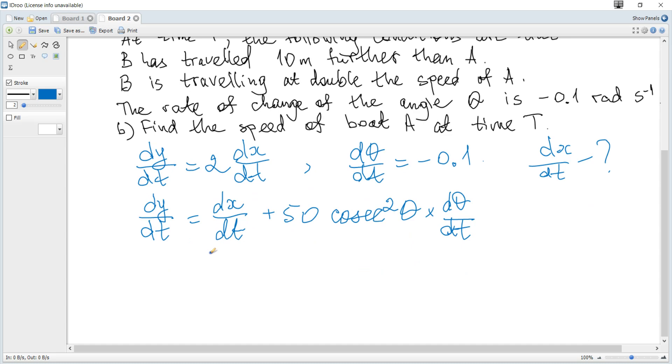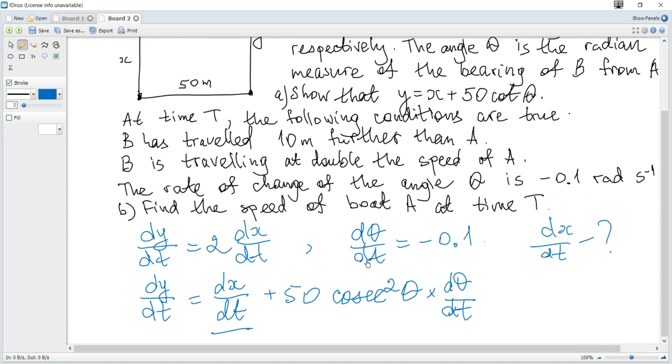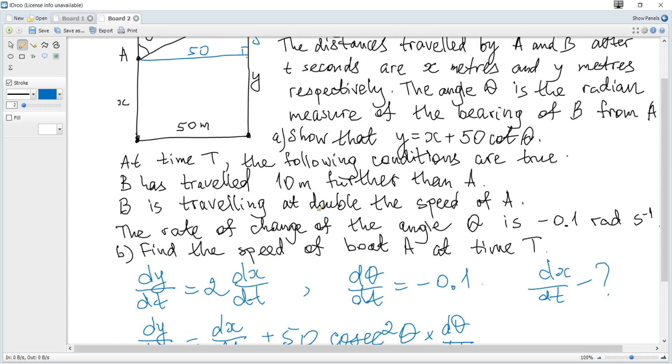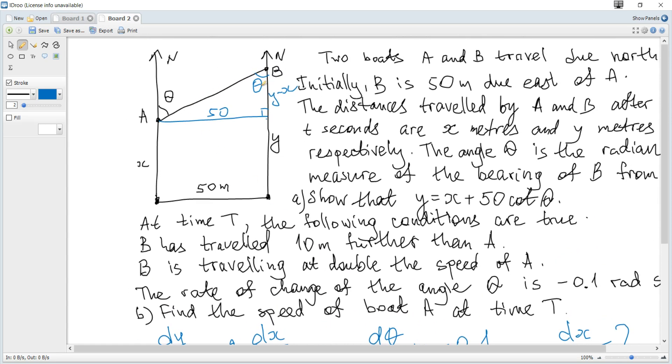And we need this. It is given in terms of dx/dt. And we can see that we need cosecant squared theta. What is cosecant? It's 1 over sine squared theta.